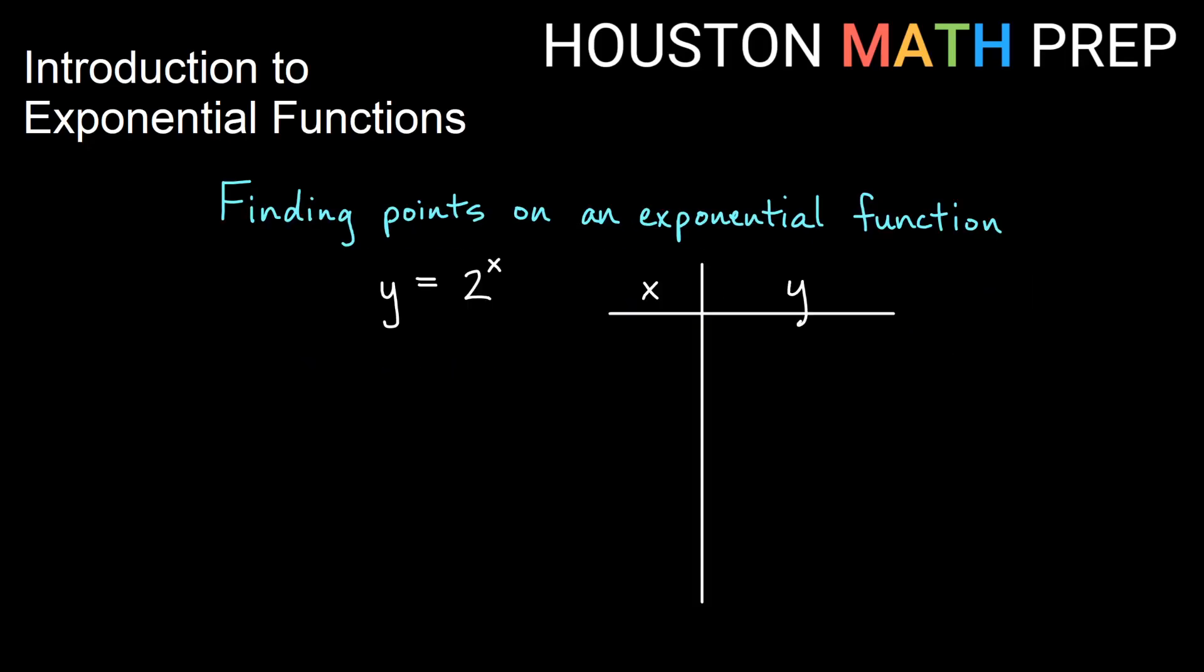Okay, now finding some points on the graph of our exponential function using y equals 2 to the x. Remember, we can always just plug in some values for x and see what we get for y, and that will give us some points. So I'll go ahead and use some numbers. We would probably plug in 1, 2, 3. Let's use 0. Let's also use some negative numbers: negative 1, negative 2, negative 3. So if I plug in 1 for x in my formula, then that means that y equals 2 to the 1, and we know anything to the 1 is itself, so we get 2 for y. So when I plugged in 1, I get 2 for y. 1, 2 is on our graph.